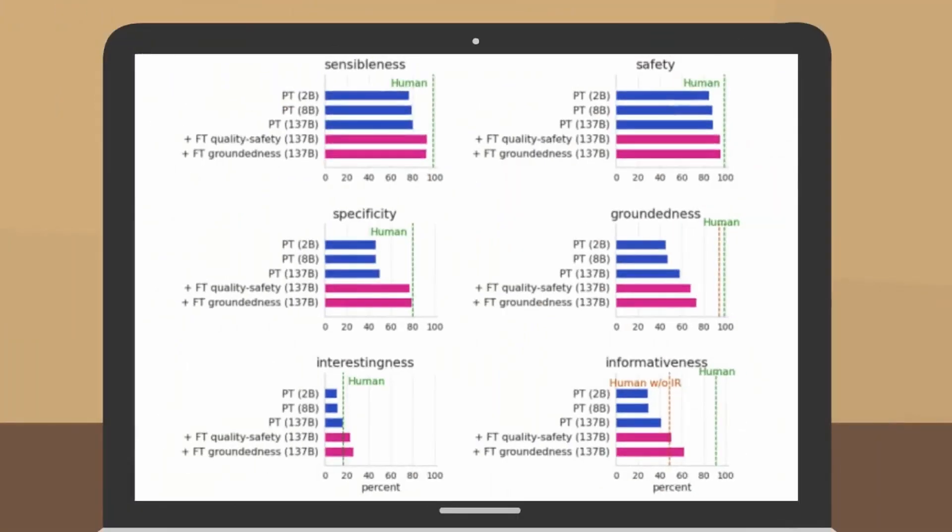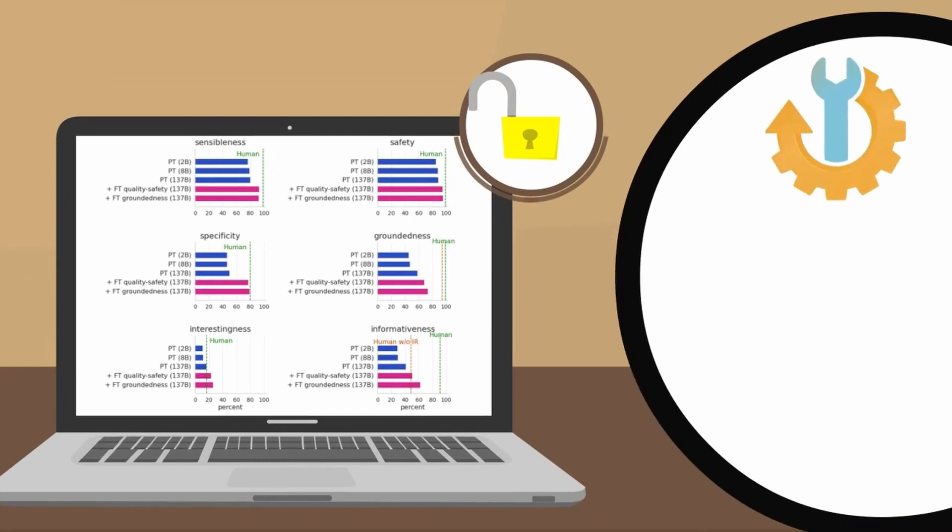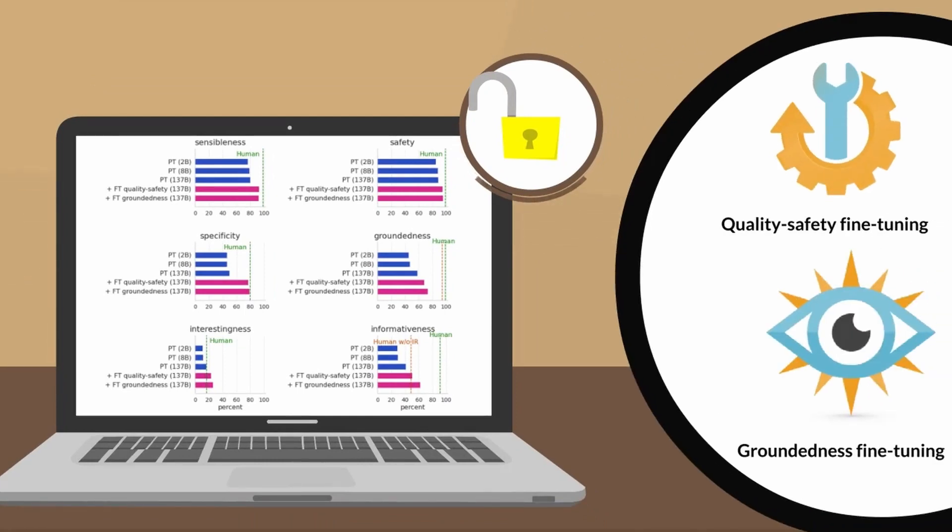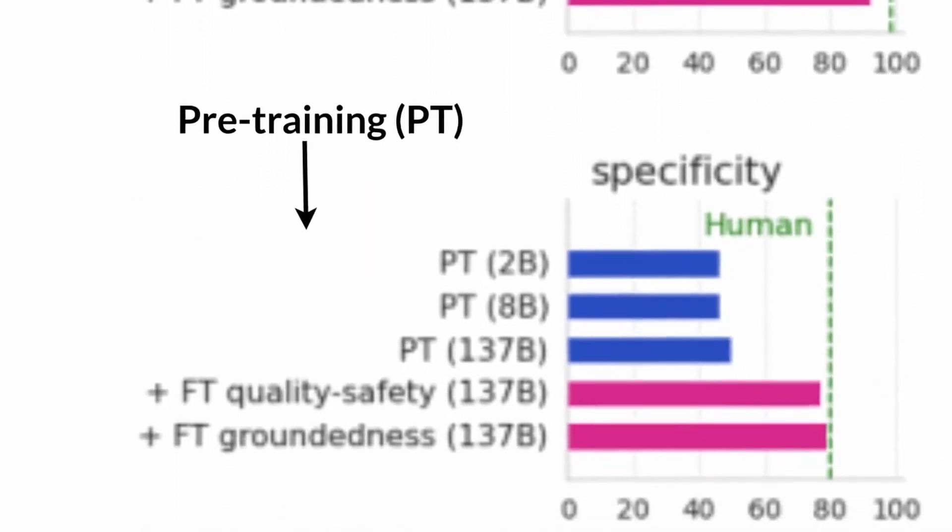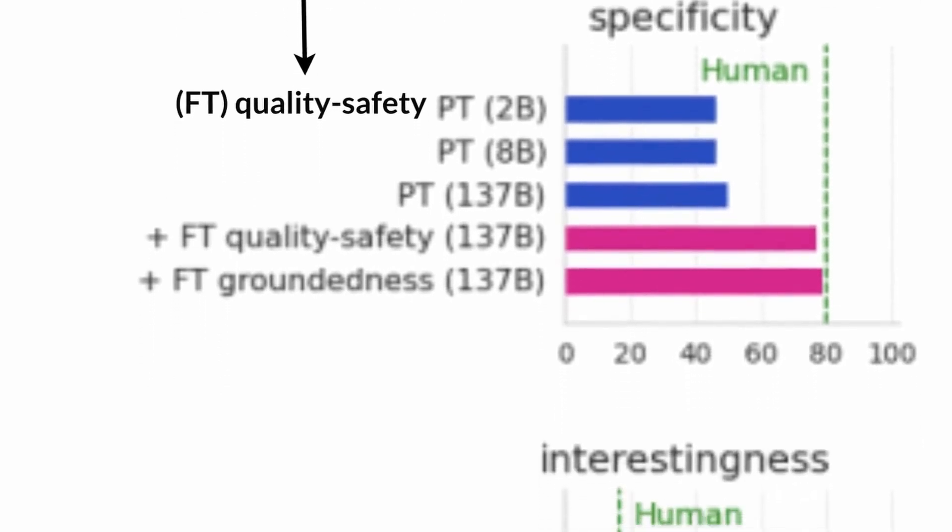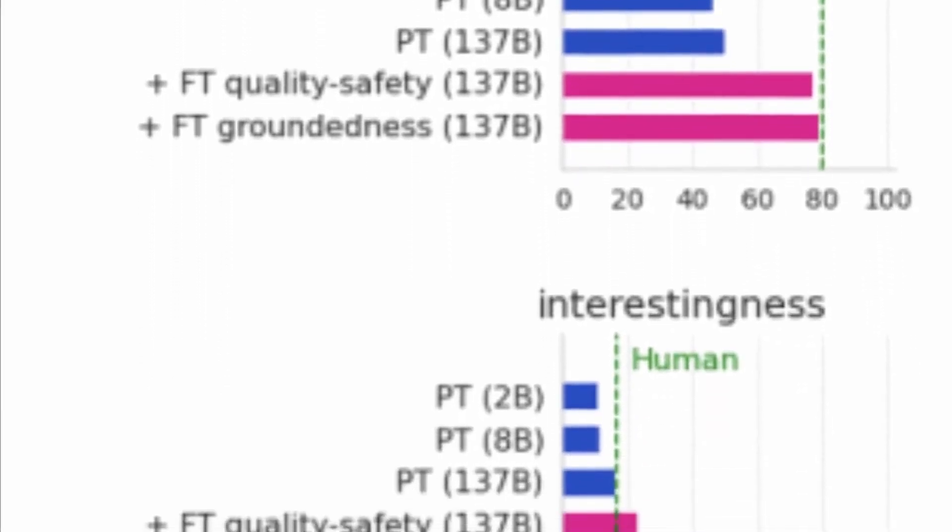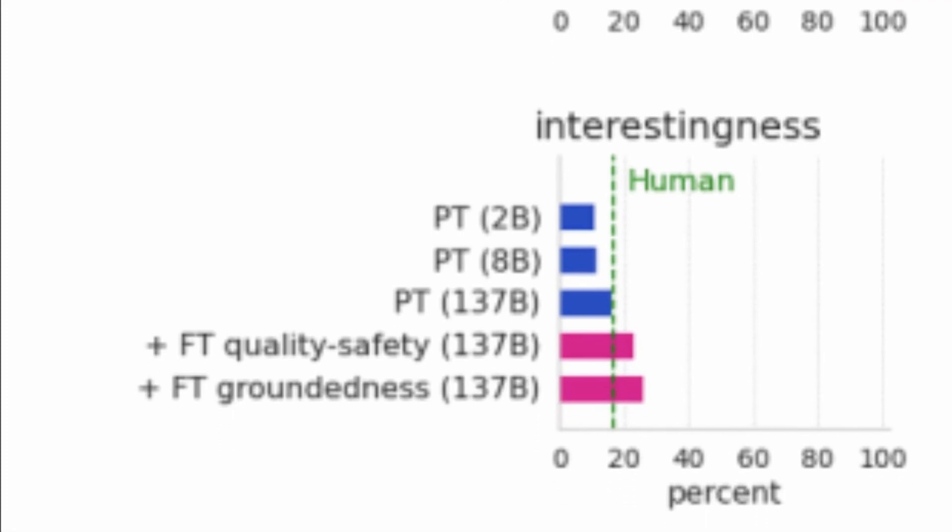This illustration breaks down the contributions of quality safety fine-tuning and groundedness fine-tuning to our final results using the largest model. There's a general increase in performance across all metrics between pre-training (PT) and fine-tuning (FT quality safety). Groundedness further improves from FT quality safety to FT groundedness, which is what Lambda is about. It is meant to ground the model-generated statements about the external world on an information retrieval system.